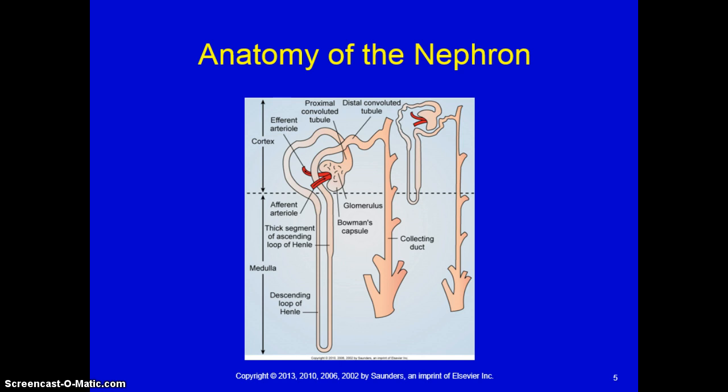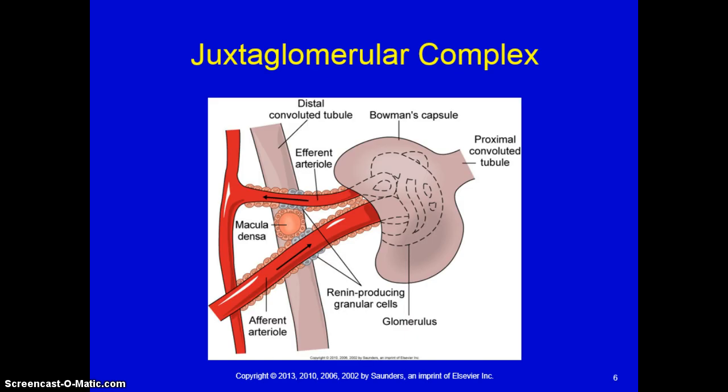Aldosterone is also important — it increases kidney resorption of sodium and water, which helps restore blood pressure, blood volume, and blood sodium levels. Looking at the juxtaglomerular complex in this photo, you can see where the renin-producing granular cells are located on the afferent and efferent arteriole.